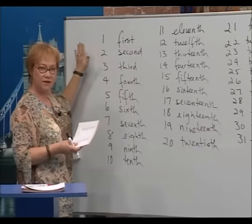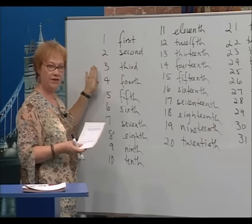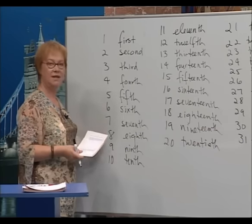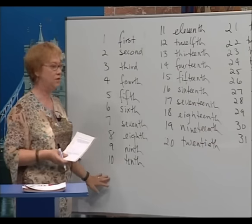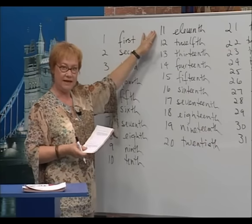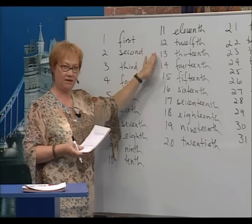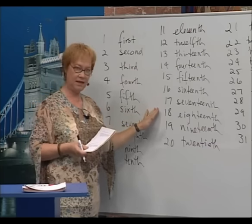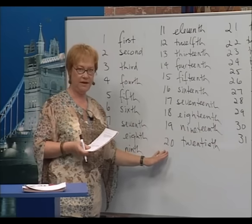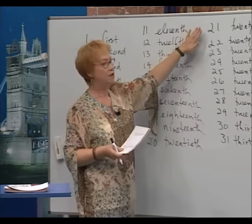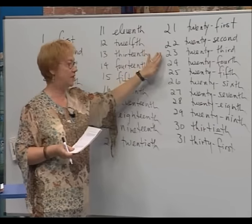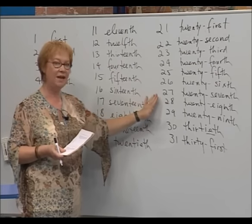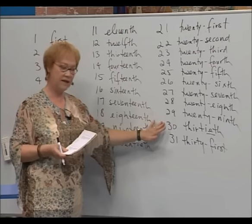Let's say these again. First, second, third, fourth, fifth, sixth, seventh, eighth, ninth, tenth. Now the teens: eleventh, twelfth, thirteenth, fourteenth, fifteenth, sixteenth, seventeenth, eighteenth, nineteenth, twentieth. And now the last group: twenty-first, twenty-second, twenty-third, twenty-fourth, twenty-fifth, twenty-sixth, twenty-seventh, twenty-eighth, twenty-ninth, thirtieth, thirty-first.